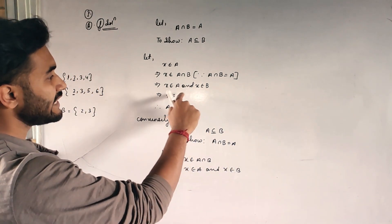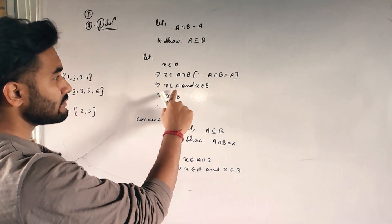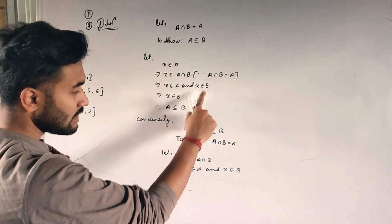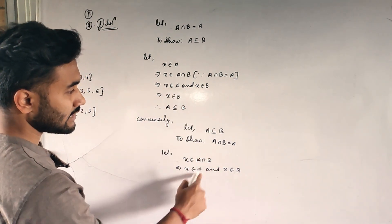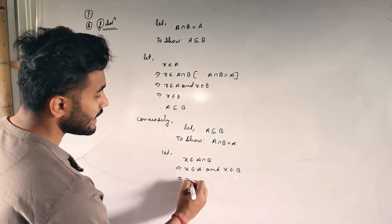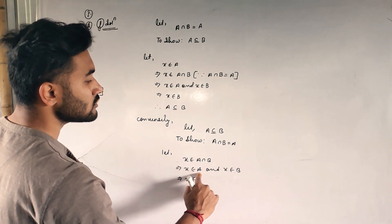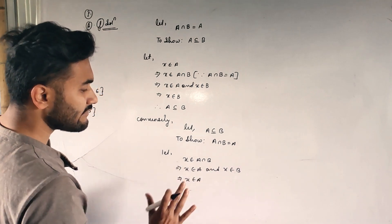I am sure it is in A also and I am sure it is in B also. Like in this part, I needed B so I wrote B because I am sure it is in A and it is in B. But in this question, in this part of the question, I need A so I will not write B this time. This time I will write X belongs to A because I am sure X is in A also and X is in B also.